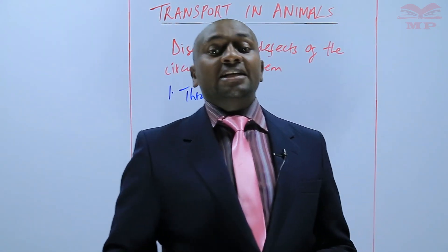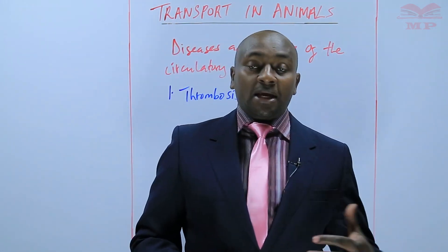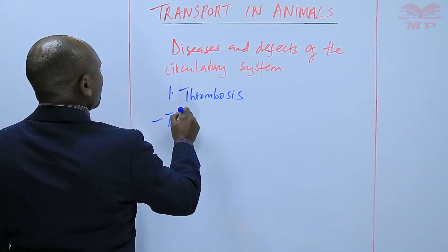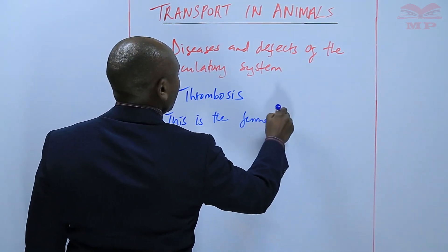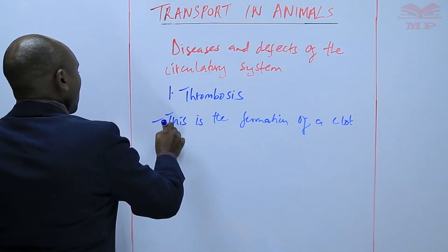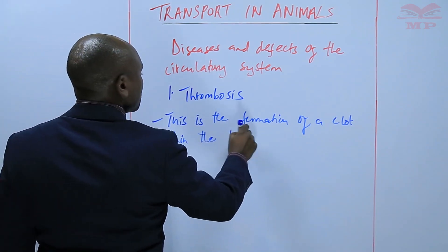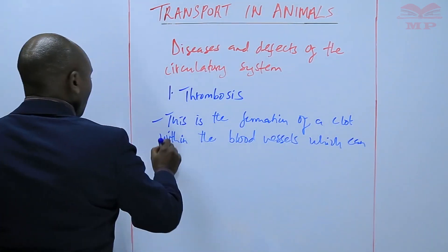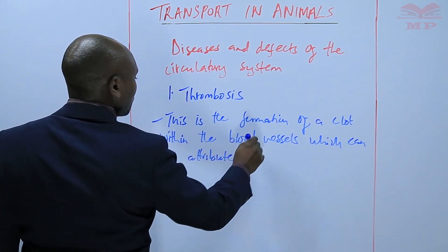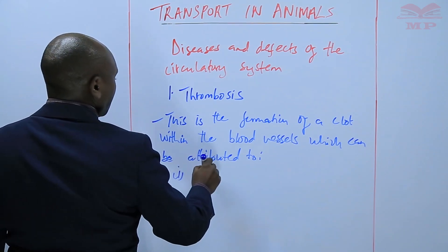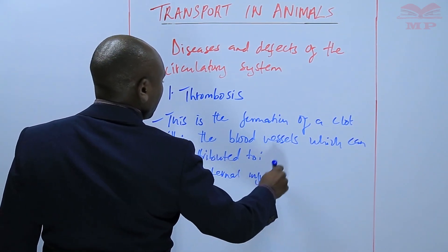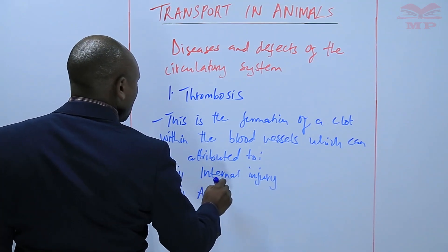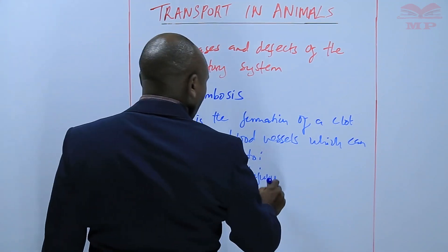Thrombosis can also be caused by an internal injury, creating a clot that obstructs the blood from flowing. So this is the formation of a clot within the blood vessels, which can be attributed to an internal injury affecting the blood vessels, or it can be as a result of accumulation of cholesterol.